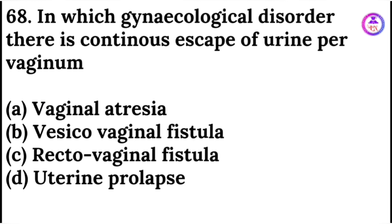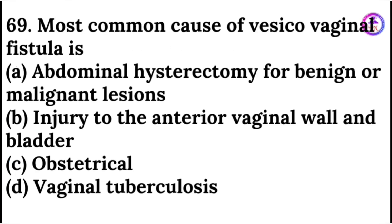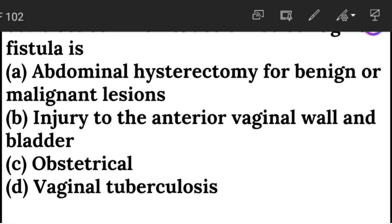In which gynecological disorder is there a continuous escape of urine per vaginum? Vesicovaginal fistula. The most common cause of vesicovaginal fistula is obstetrical — related to deliveries and childbirth.